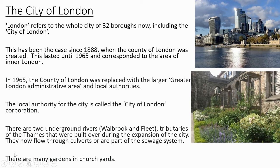London refers to the whole city of 32 boroughs, including the area of the City of London. This has been the case since 1888 when the County of London was created. This lasted until 1965 and corresponded to the area of Inner London. In 1965, the County of London was replaced with the larger Greater London administrative area and local authorities.